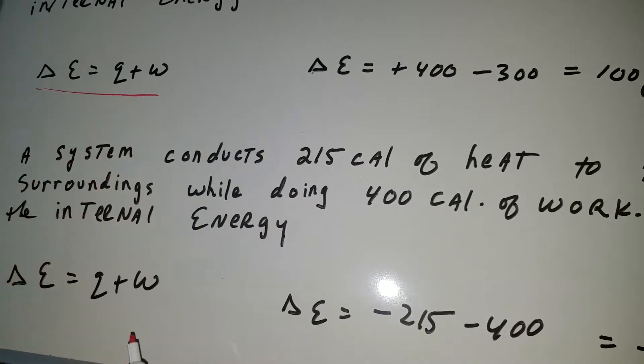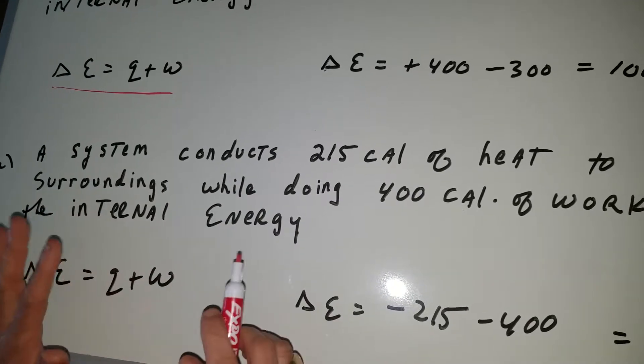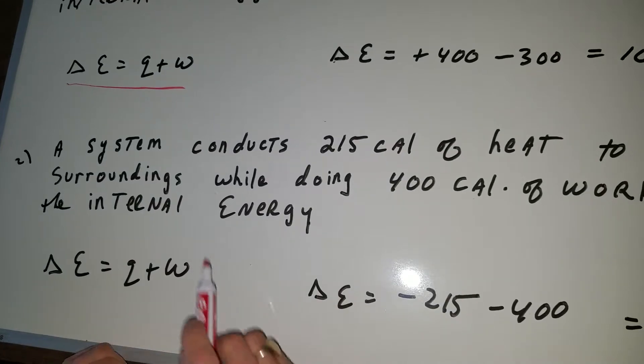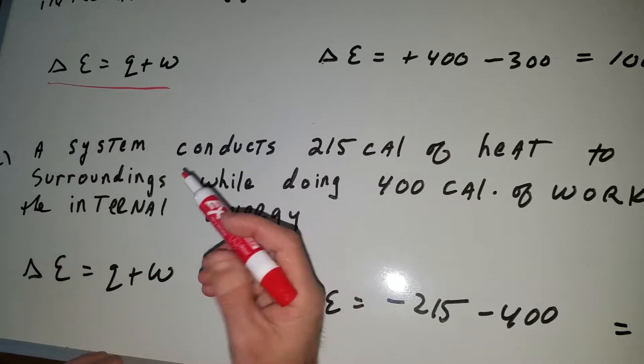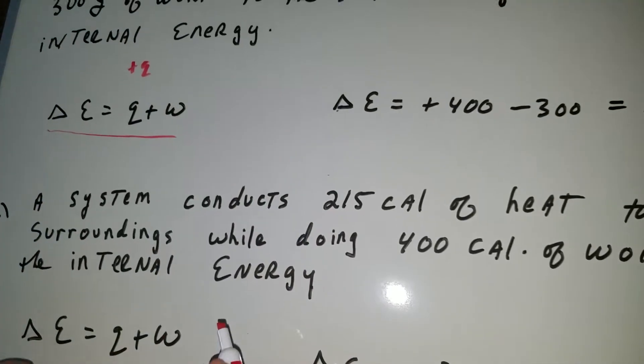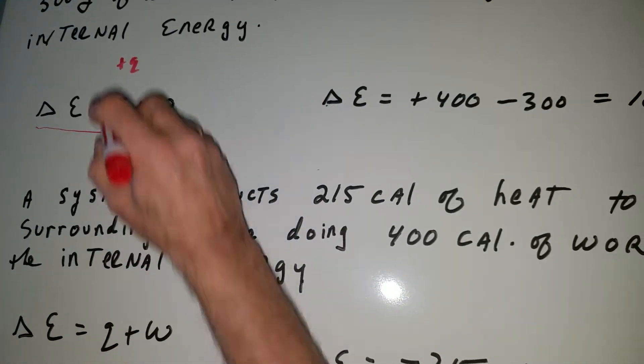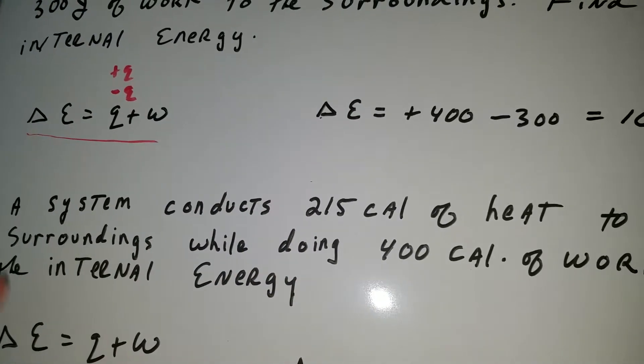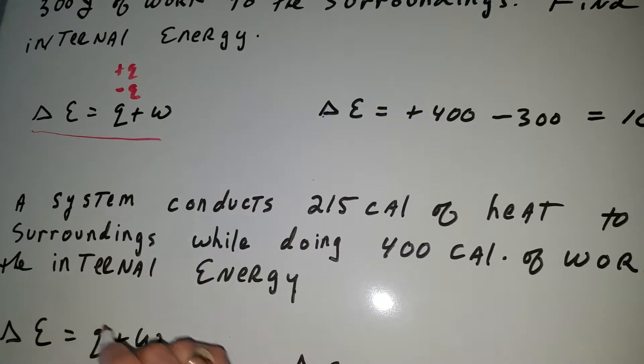Now this one tricky formula I think gets kids into a lot of trouble, so I think we should just make sure we understand each other. If heat is absorbed, it's going to be plus Q, so that's pretty easy. Plus Q means heat is absorbed, minus Q means that heat is released. That's easy enough. Here's the hard part.